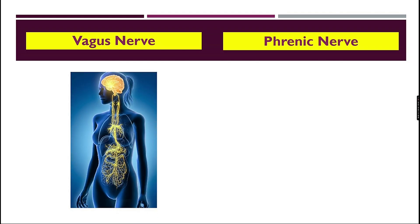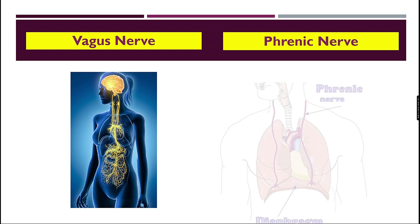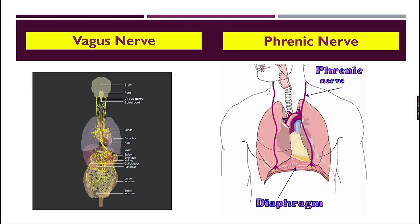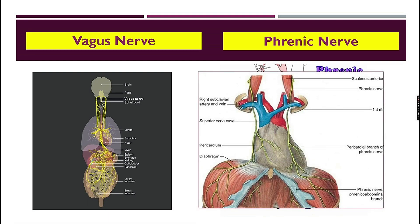Now I'll tell you about two important nerves that enter the thorax: the vagus nerve and the phrenic nerve. The vagus nerve supplies the viscera of the thorax and abdomen, while the phrenic nerve enters the thorax to supply the diaphragm.